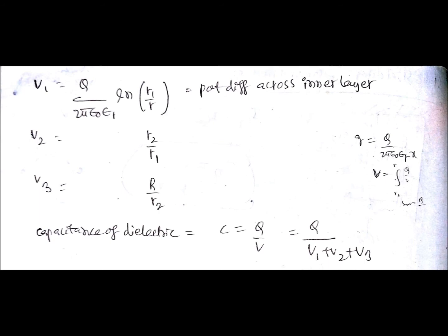For the next layer, which is next to the inner layer, potential difference is V2, and there you just need to change that to r2 by r1. Similarly, V3 will be capital R by small r2. What about the capacitance of dielectric?